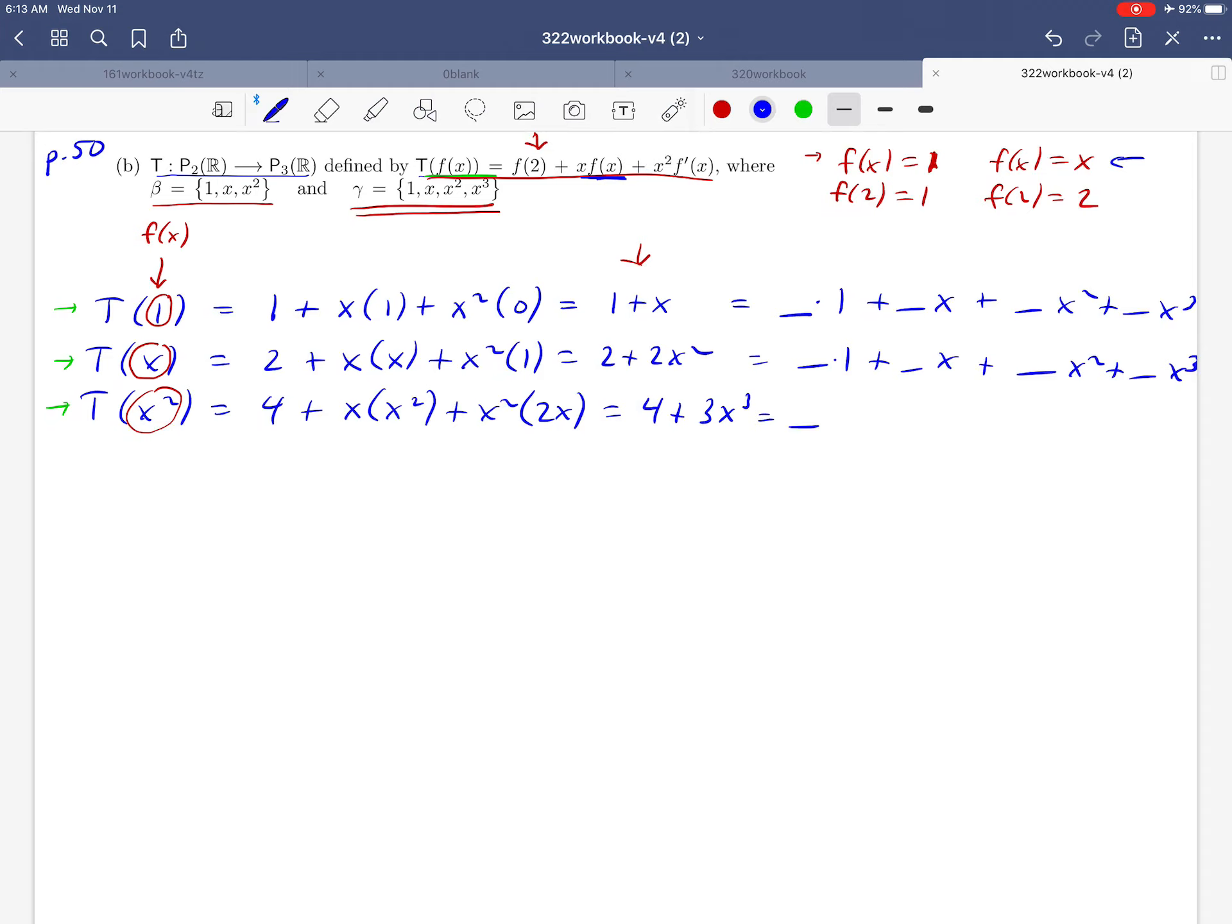And because these are standard bases, that's not difficult to do. To get a 1 plus x, we need a 1 here and a 1 here, 0's there. And 2 plus 2x squared, we need a 2 there, 2 in front of the x squared. And 4 plus 3x cubed, we're going to need a 4, 0, 0, and a 3, it looks like.